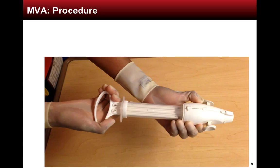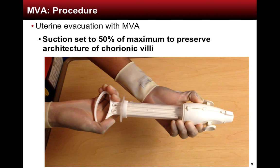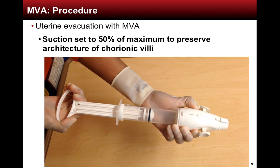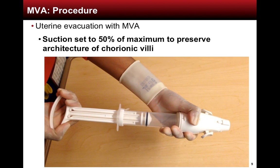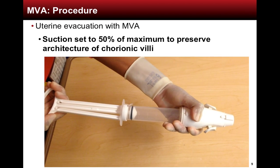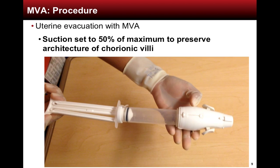After the patient is sedated, cervical dilation is performed in accordance with the size of the pregnancy. The uterus is then evacuated using manual vacuum aspiration. To prepare the syringe, set the plunger to 30 cc's or halfway before depressing the tabs at the top of the aspirator and then engaging the suction. This step is performed differently from a traditional MVA in order to preserve the architecture of the chorionic villi. Once the cannula is connected, the device is inserted into the cavity and the MVA procedure is performed.